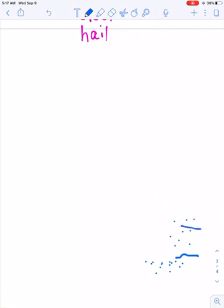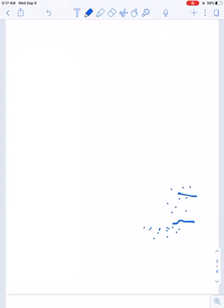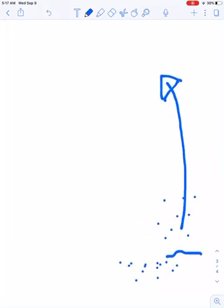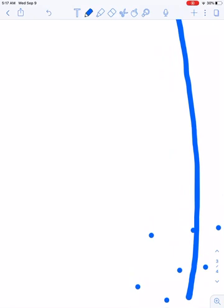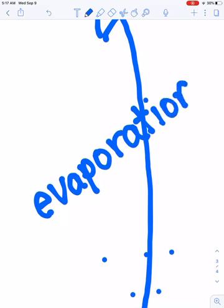So what you're going to draw is a line or an arrow going up into the atmosphere or into the air. And then next to it, you want to write the word evaporation. Because that's one part of the water cycle. Evaporation.